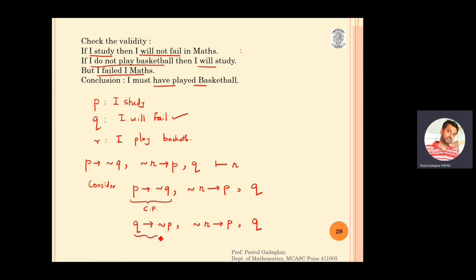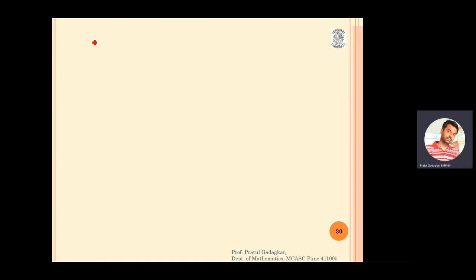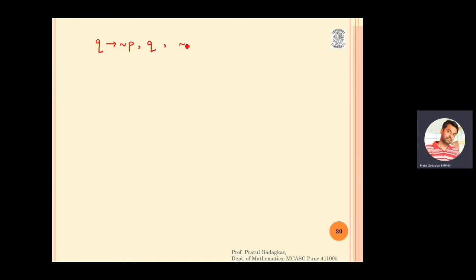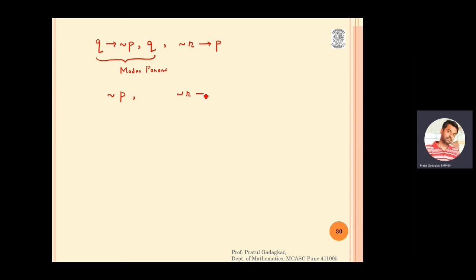Looking at the first and last statements together — q implies negation p, then q — I can apply modus ponens. Using q and q implies negation p, modus ponens gives negation p. The remaining statement is negation r implies p.